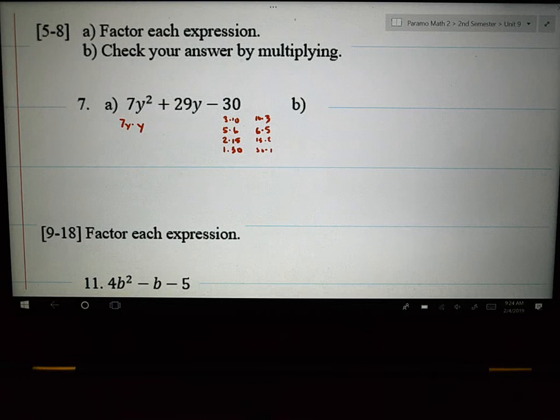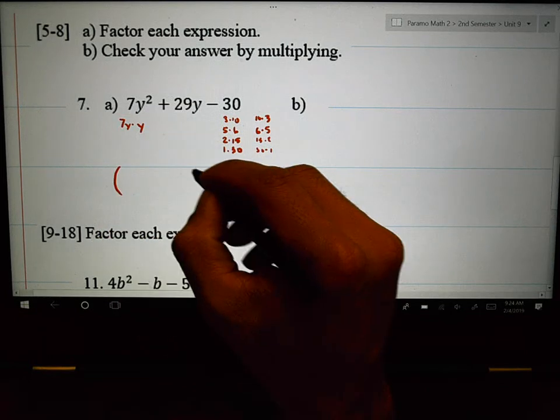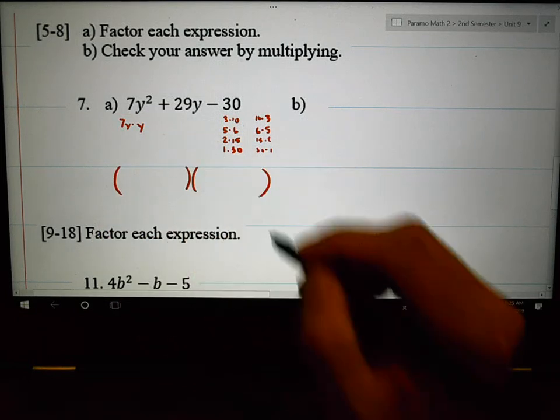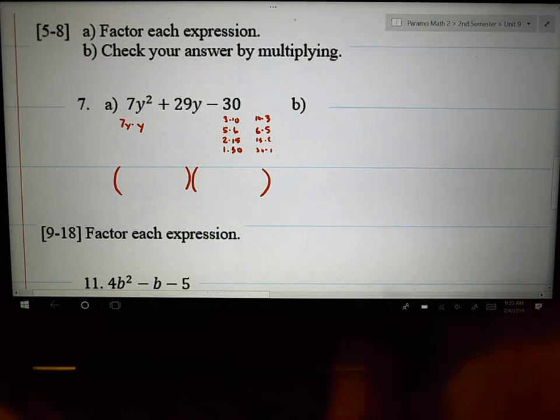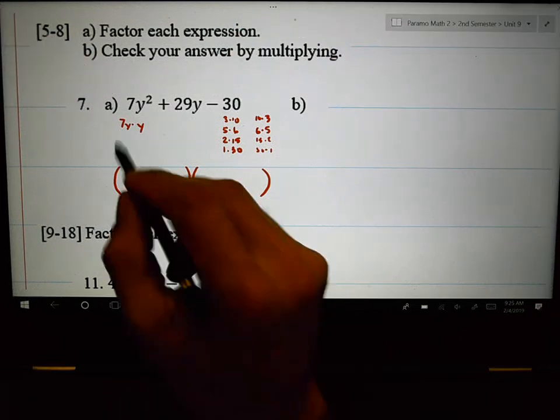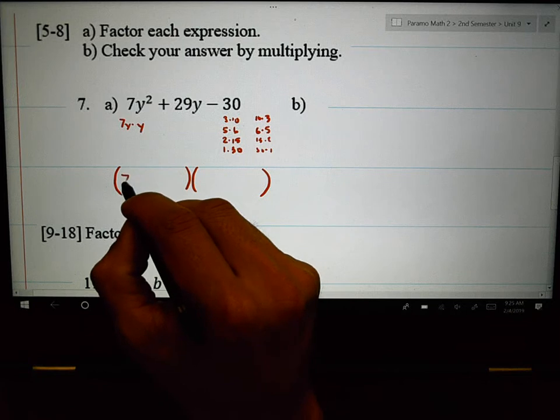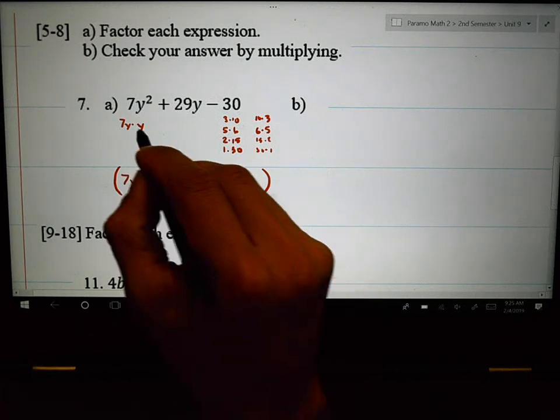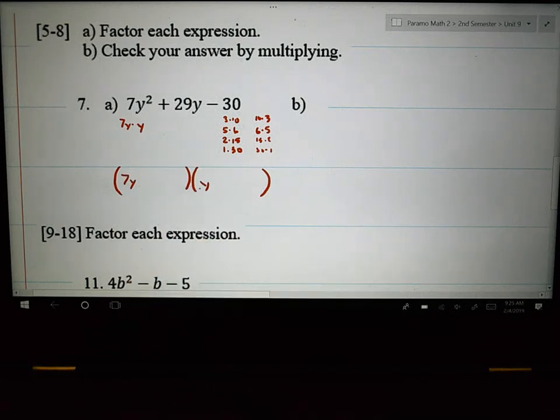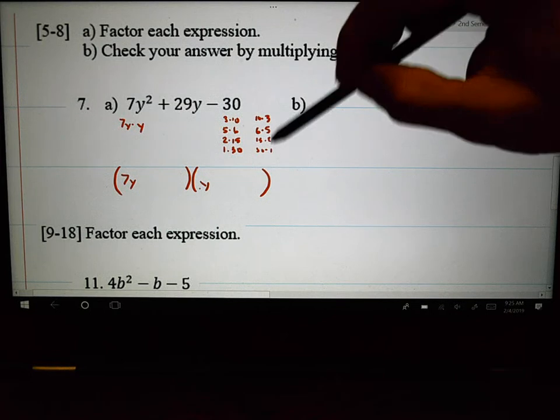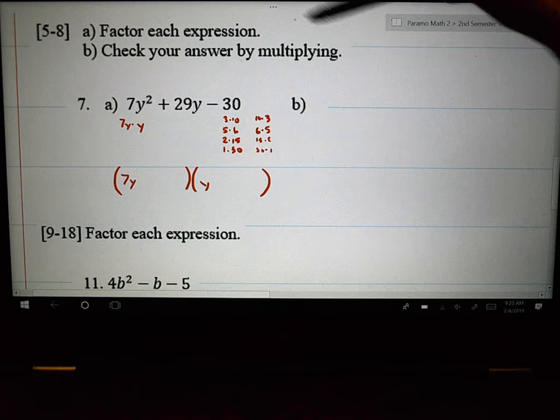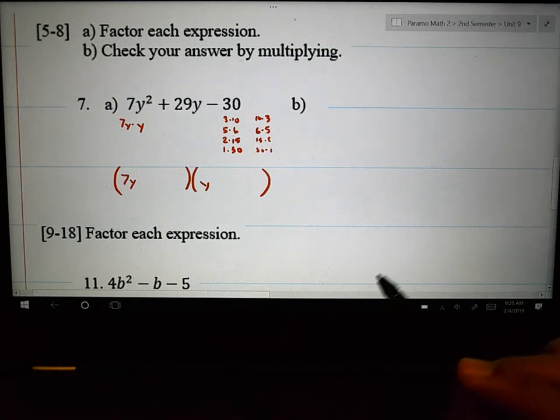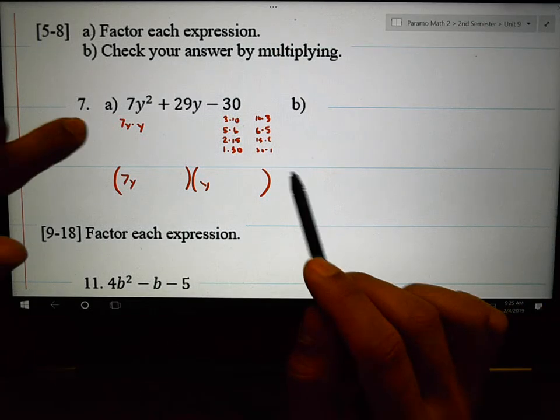So now at this point, I'm thinking which combination is going to multiply to give me this particular trinomial. I know I'm probably going to have to use the 7Y and the Y because those are prime. That's not going to change. What may change are which possibilities am I going to use. And you look at how many choices you have. How am I going to get to 29? Let me think. Let's just try some numbers.